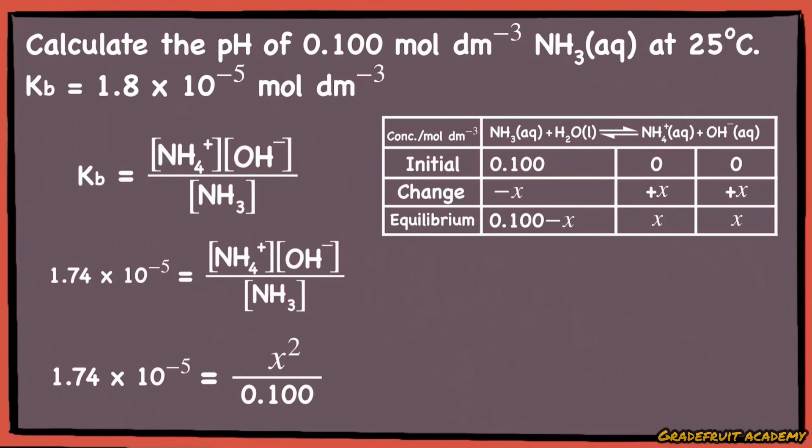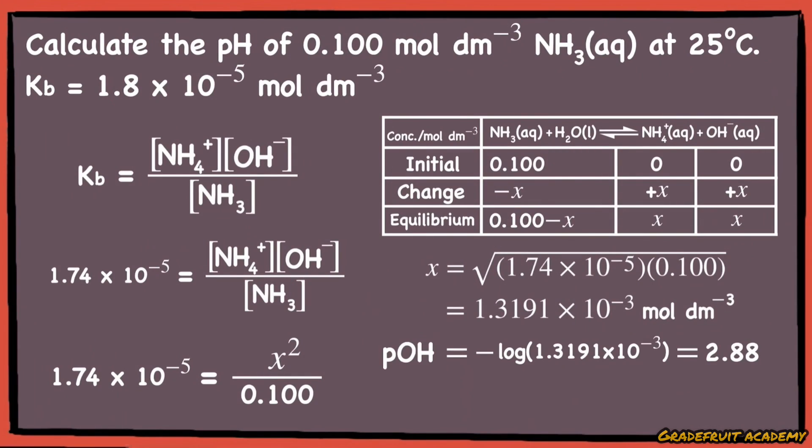So x, which is also the concentration of hydroxide ions present at equilibrium, is 1.3191 × 10⁻³ mol per dm³ rounded to five significant figures. So the pOH will be 2.88, and because we are finding the pH, we will need to take 14 minus 2.88, which gives us 11.1.